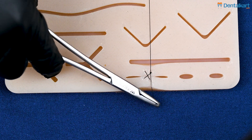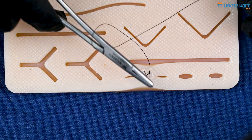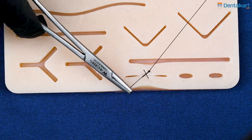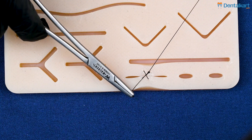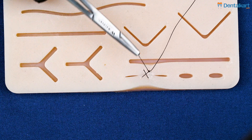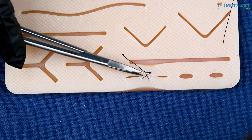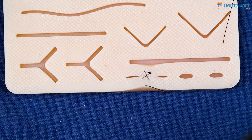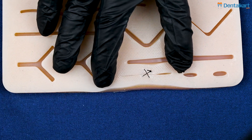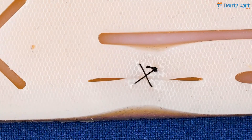Once we've closed or tied this suture, we can see the approximation that we get. And once we've cut the knot, you can see what the suture looks like in a figure of eight, and why the name is figure of eight suture.